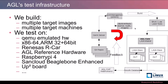We host the artifacts on a simple web server. As targets, we have QEMU in x86, ARM 32, and ARM 64-bit. We have Renesas R-Car Gen 3 in the form of an H3 plus Kingfisher. We have the AGL reference hardware, which is derived from R-Car Gen 3. We also have builds for the Raspberry Pi 4, the SanCloud BeagleBone Enhanced, and the UpSquare, which is meanwhile the same as a QEMU x86-64 build.